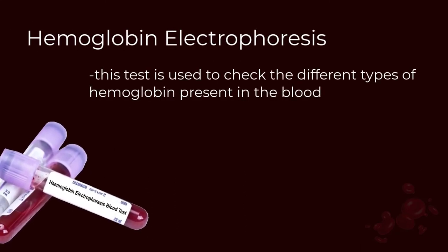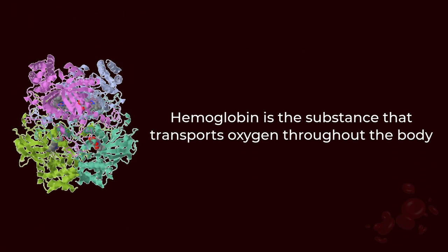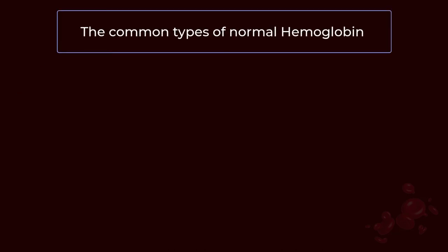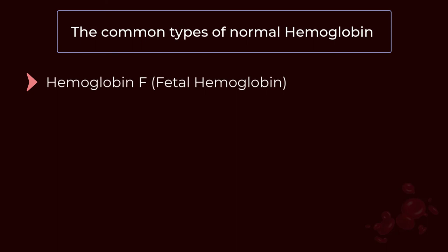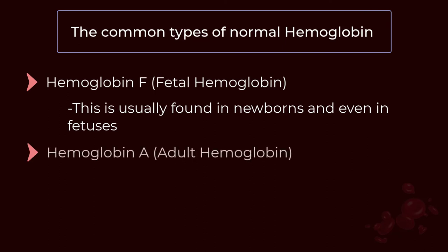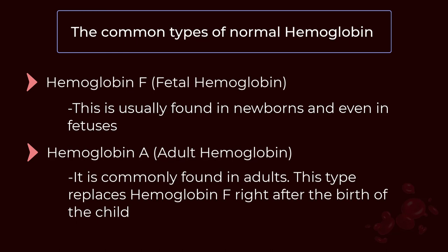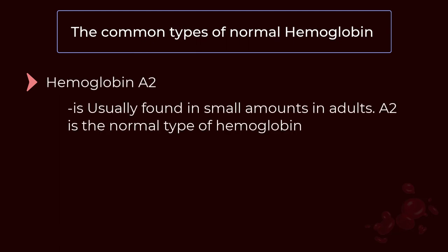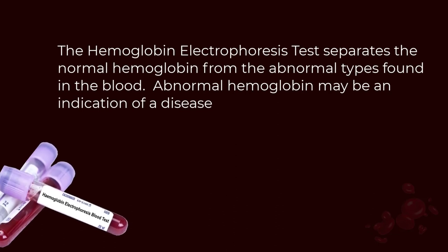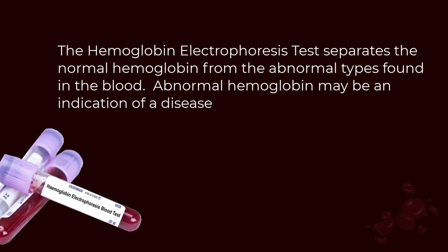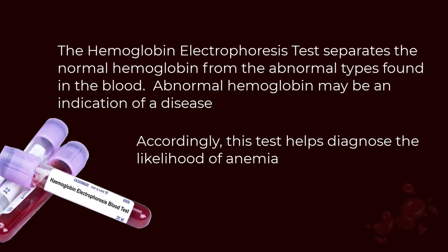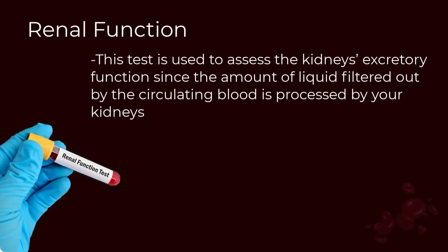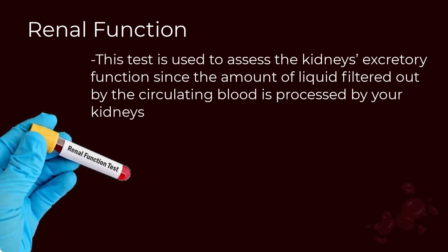Hemoglobin electrophoresis is used to check the different types of hemoglobin present in the blood. Hemoglobin is the substance that transports oxygen throughout the body. The common normal types include hemoglobin F (fetal hemoglobin, found in newborns and fetuses), hemoglobin A (adult hemoglobin, which replaces hemoglobin F after birth), and hemoglobin A2 (found in small amounts in adults). The test separates normal hemoglobin from abnormal types, which may indicate disease, and helps diagnose the likelihood of anemia. Renal function testing assesses the kidney's filtration function.